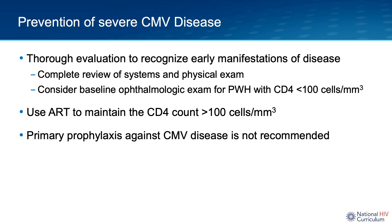These ocular complaints should prompt an urgent referral to the ophthalmologist. In fact, some experts still recommend a baseline ophthalmologic exam for people with HIV with T-cell counts less than 100. CMV end-organ disease is best prevented using antiretroviral therapy to maintain T-cell count greater than 100. Using antivirals for primary prophylaxis against CMV disease is not recommended in people with HIV.